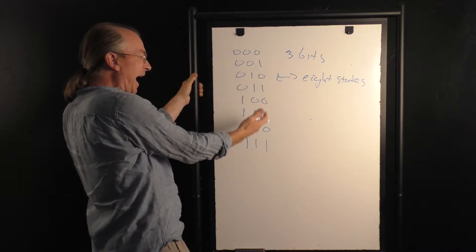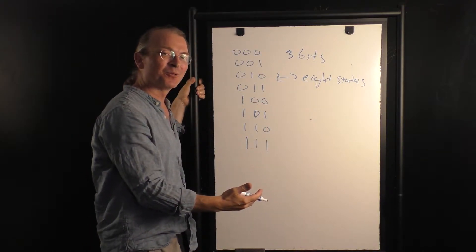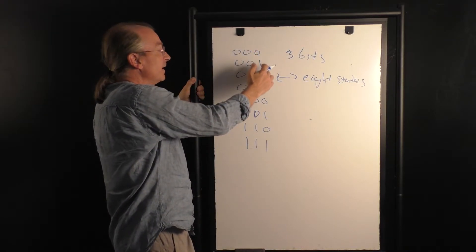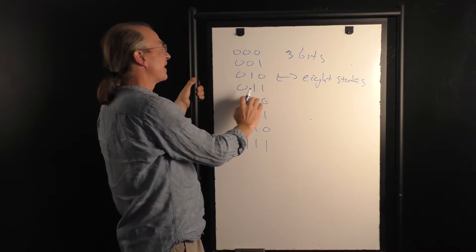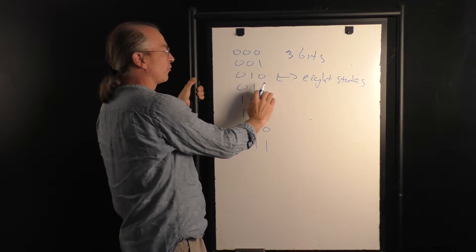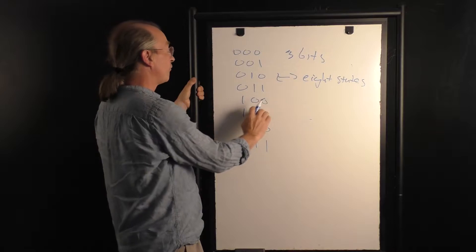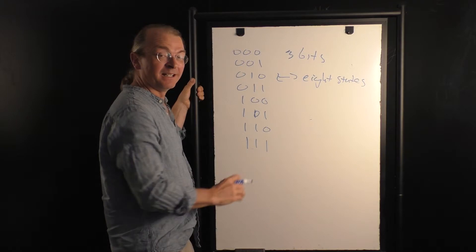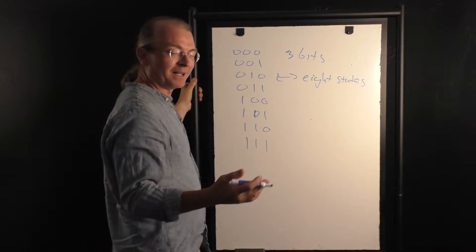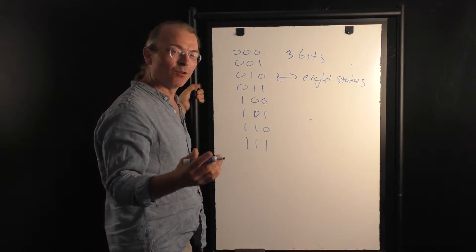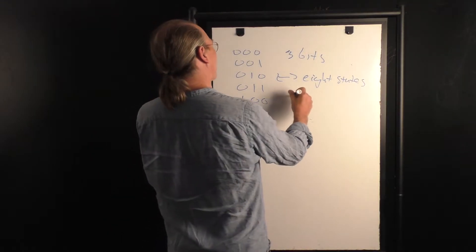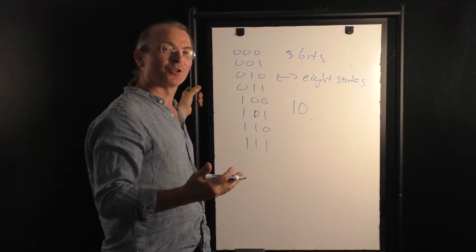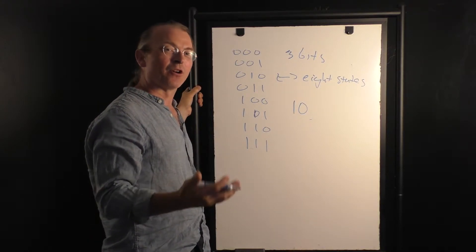All I'm doing is just counting out, and here you see me counting in binary notation. These are just the numbers 0, 1; 0 1 0 is 2 in binary notation; 0 1 1 is 3; 1 0 0 is 4; 1 0 1 is 5; 1 1 0 is 6; 1 1 1 is 7. Which shows the rationale behind the old joke that there are 10 different kinds of people in the universe: those who understand binary notation, and those who don't.